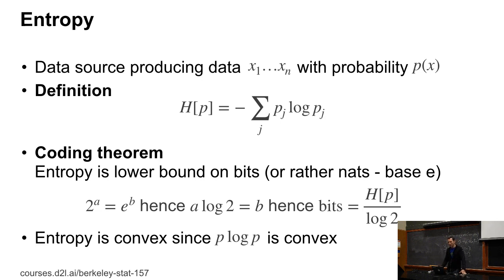In other words, it's the expected value of minus log of P. And then there's this very famous coding theorem, namely that the entropy is the lower bound on the number of bits, or in this case, rather nats, so base e, that are needed. And we're going to prove this in this class. It's probably one of the more complex proofs that we'll do.